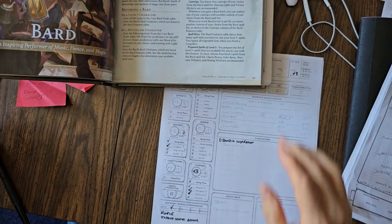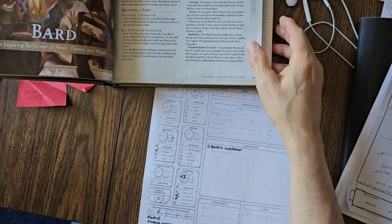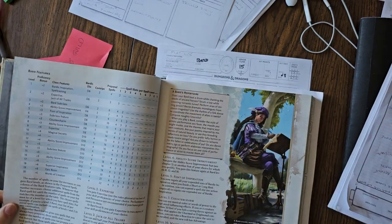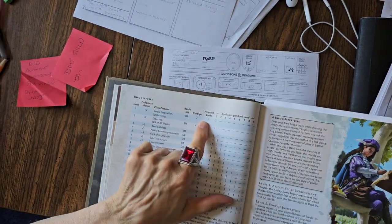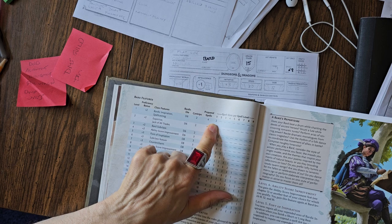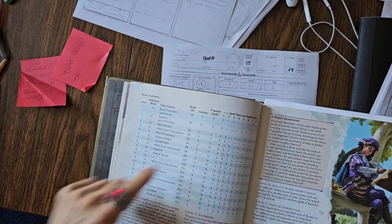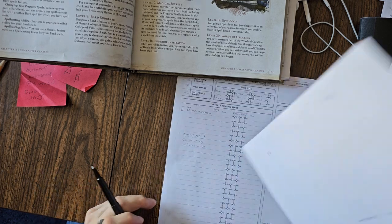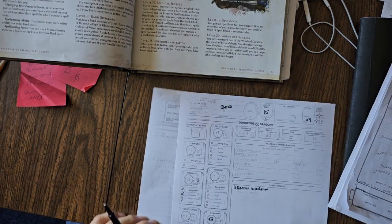The way I'm building this, our charisma modifier is going to end up being plus three. So we have three of those per long rest. That's really important. I think that's a really significant thing to be able to do.